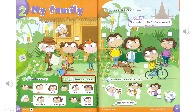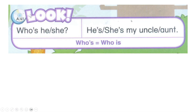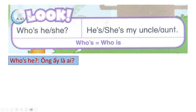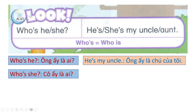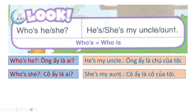Track A41. Page 23. Look. Who's he? He's my uncle. Who's she? She's my aunt. She's my aunt.